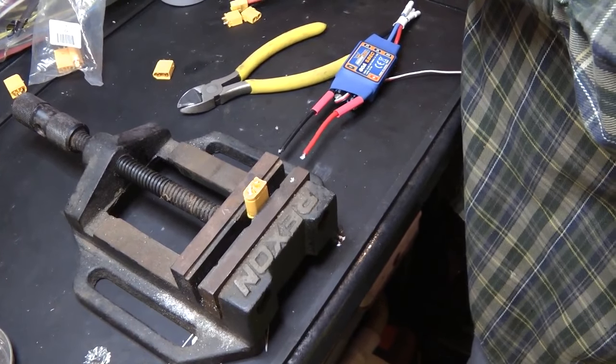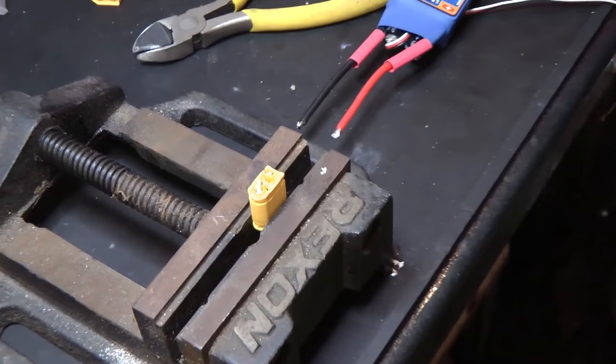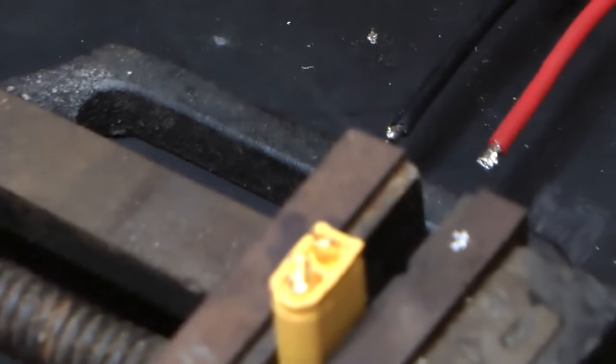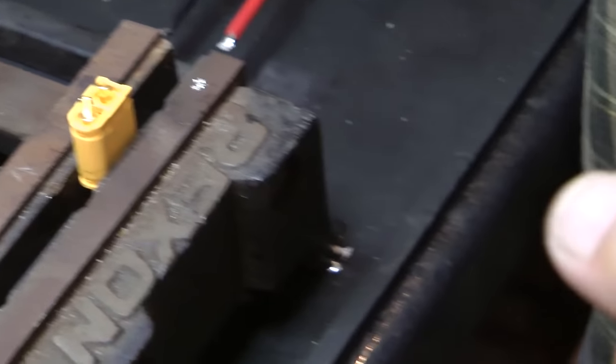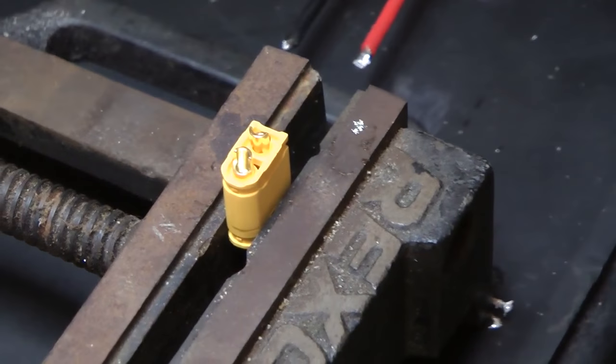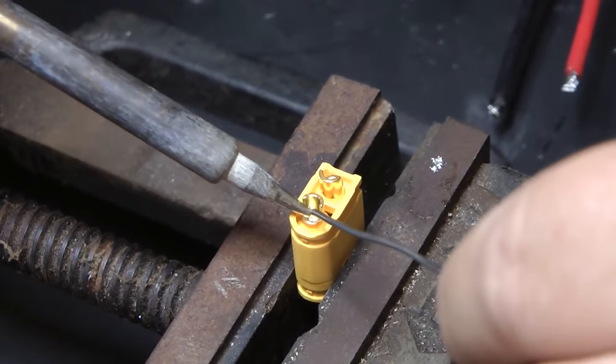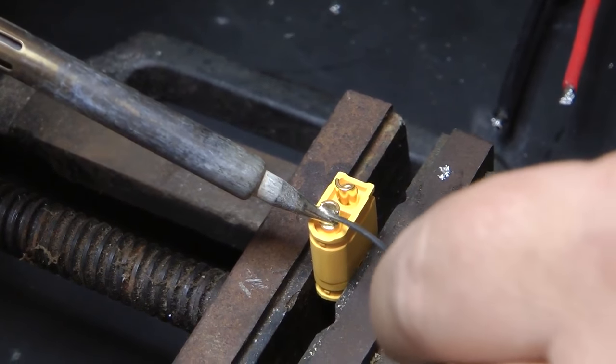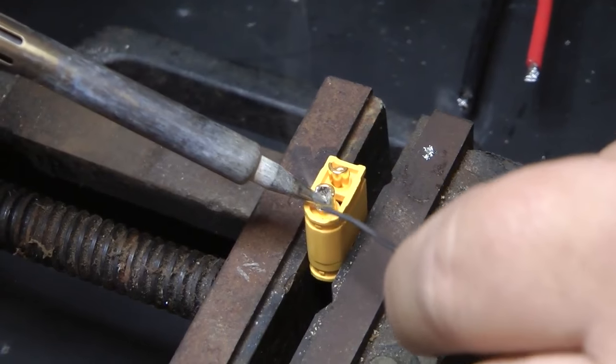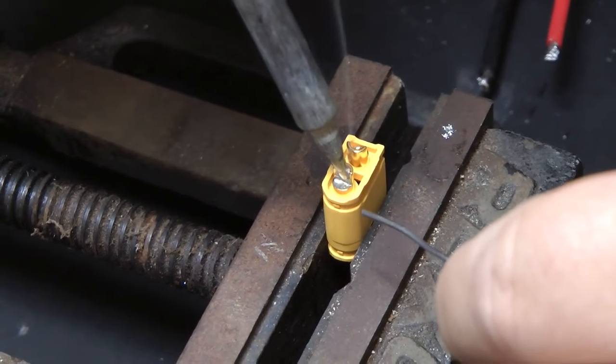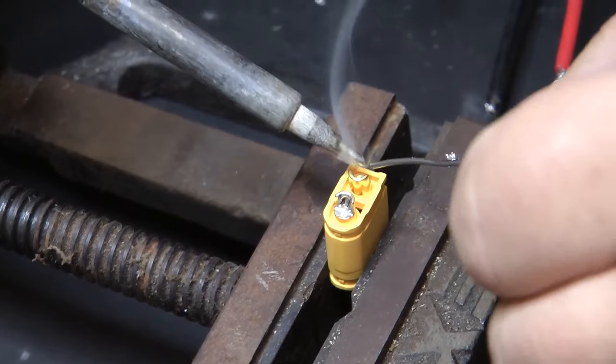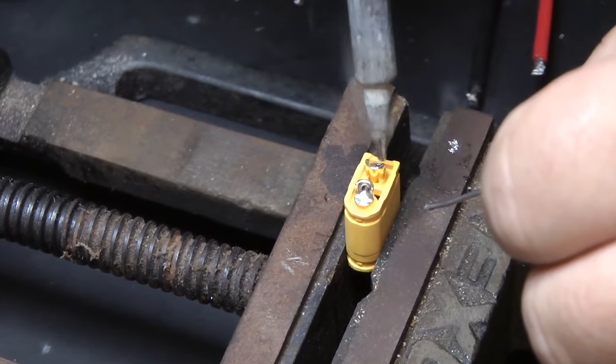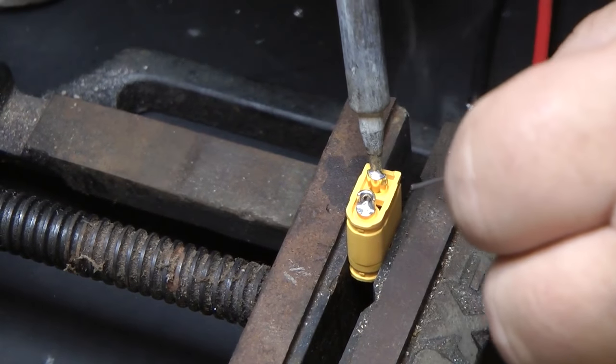Right, there we go. So I cleaned my tip up. Got some normal 60-40 lead there. And my soldering iron. So we're going to tin this up. There. Then we'll tin up the other side. There.